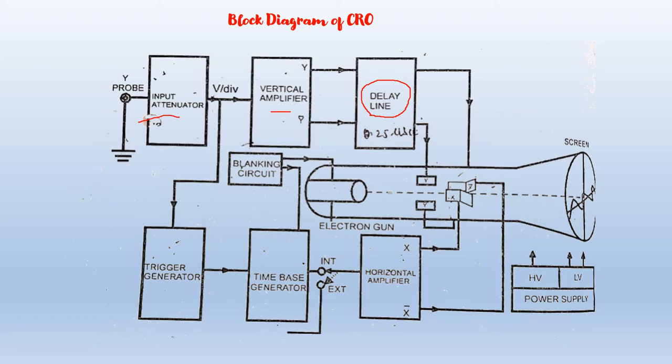The next block is the Trigger Generator. A sample of the input waveform is fed to the trigger circuit, which produces a trigger pulse at some selected point on the input waveform. This trigger pulse is used to start the time-based generator, which then starts the horizontal sweep of the CRT spot from the left-hand side of the screen.